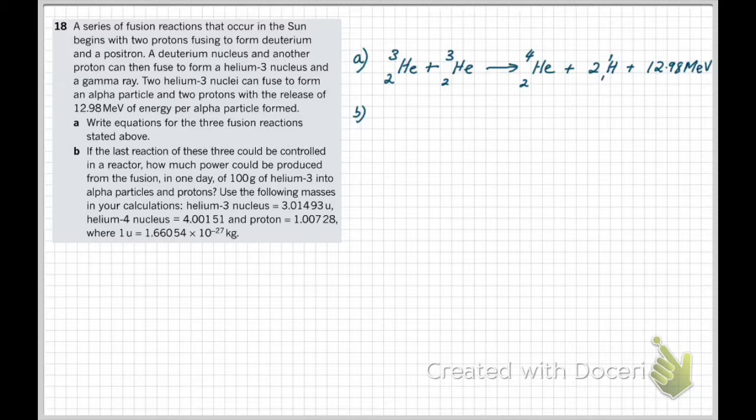So to solve part B, the most intuitive way I found to solve this is to start with 100 grams of helium-3 and work out how many atomic mass units that is. In general we want to work in atomic mass units. So we take 100 grams, express it in kilograms, and divide that by the conversion factor to get 6.024 by 10 to the 25th atomic mass units.